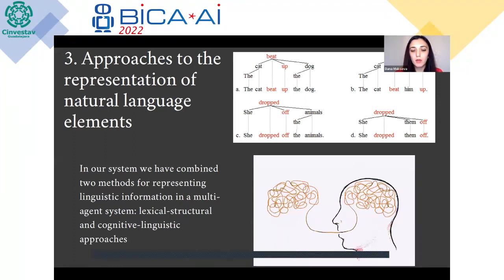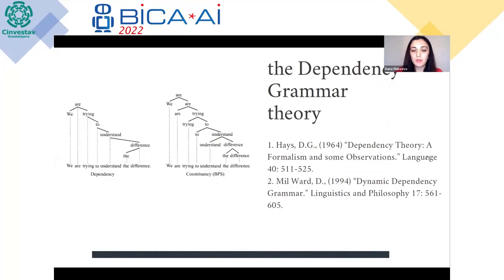In our system, we have combined two methods of representing linguistic information in a multi-agent system: lexical-structural and cognitive-linguistic approaches. In the first case, agents are associated with morphosyntactic categories of words and display appropriate behavior. They exchange messages and search for agents with whom they can maintain a contract, thereby building relationships of a more complex level until the entire multi-agent model of utterance is represented. Speech recognition, understanding and synthesis is carried out via the grammatical rules of the language. This idea is close to the dependency grammar theory, since it involves application of the principles of governing and dependence of immediate constituents over utterance, which ultimately leads to the modeling of the structural representation of the statement.